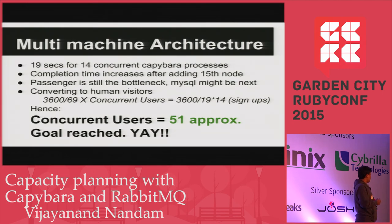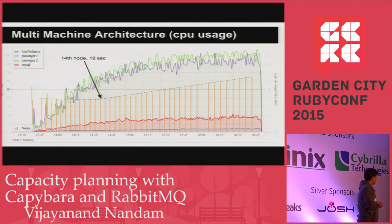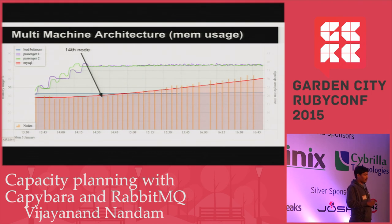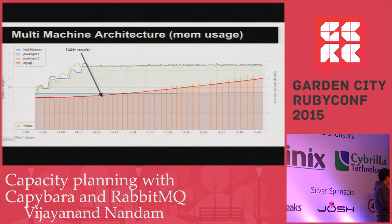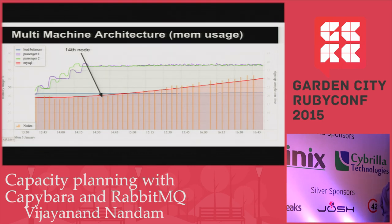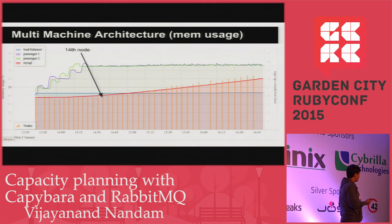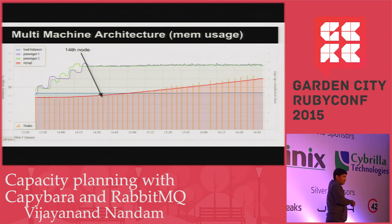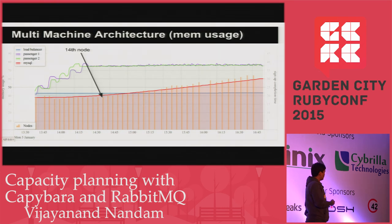Looking at the graphs, the Passenger server is maxing out on memory, so we may need to increase the size of the Passenger systems to support more Passenger processes. MySQL memory usage grows continuously as we increase the load, and has not yet reached 100% memory usage, but once we scale Passenger, the MySQL server will likely hit its bottleneck next.